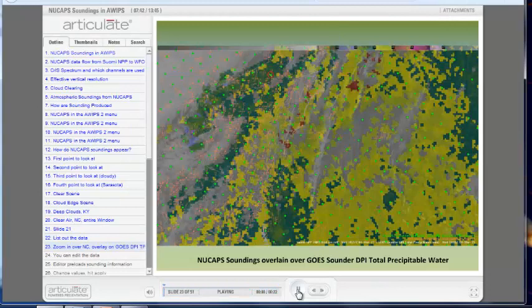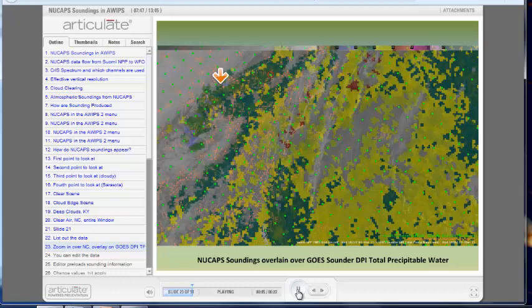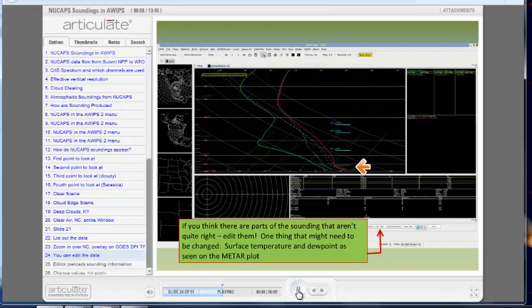This is, again, the point in clear air over North Carolina. Here's the border of North Carolina and Virginia. NuCAPS data are plotted on top of GOES sounder DPI total precipitable water. Surface METARs are also plotted to give you an idea of what the temperature and dew point at the surface in the sounding should be. And here's the sounding again from the clear air with the well-mixed boundary layer.